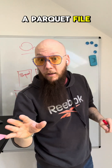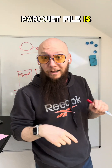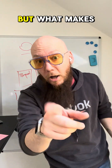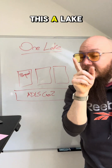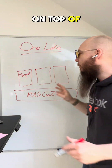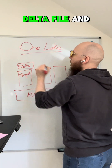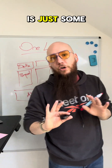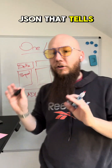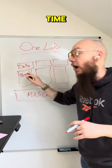If you want to know what a Parquet file is, I've got a pinned video on this channel explaining it — it was unreasonably successful and kicked off this whole shenanigan here. But what makes this a lakehouse is that on top of each of the Parquet files, we have a Delta file. And that Delta file is just some JSON — some tracking JSON that tells us how this Parquet file has been changed over time.